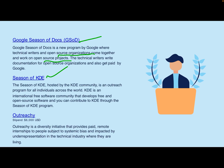Season of KDE, hosted by the KDE Community, is an outreach program for all individuals across the world. KDE is a large international software community that develops free and open source software, and you can contribute there too. Outreachy is another program where you can get a stipend of $6,000. It is a diversity initiative that provides paid remote internships to people subject to systematic bias and underrepresentation in the technical industry.